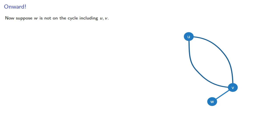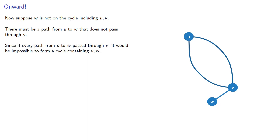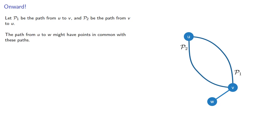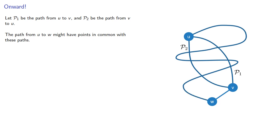Now suppose w is not on the cycle that includes u and v. Because the graph is connected, there must be a path from u to w that does not pass through v. And that's because if every path from u to w passes through v, it would be impossible to form a cycle containing u and w. So we have part of our cycle from u to v and the remaining part from v back to u. The path from u to w might have points in common with these paths, but there's going to be a last common point u prime, which we'll assume is on p2.